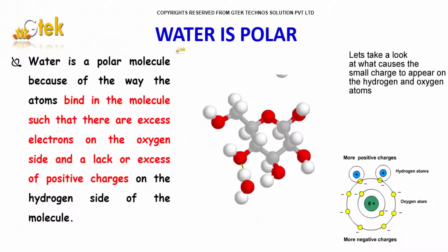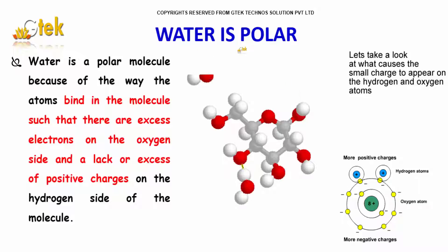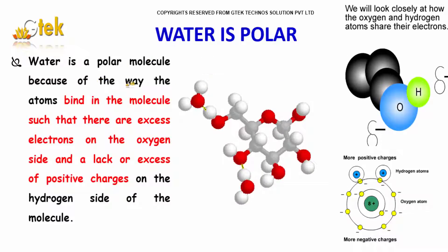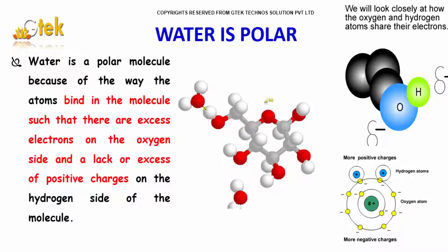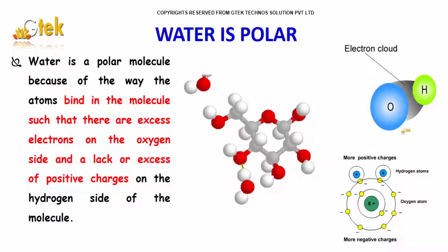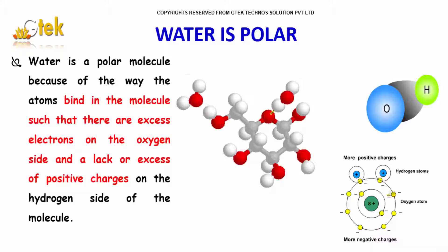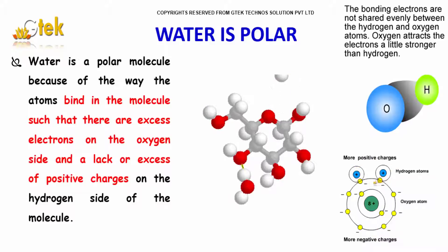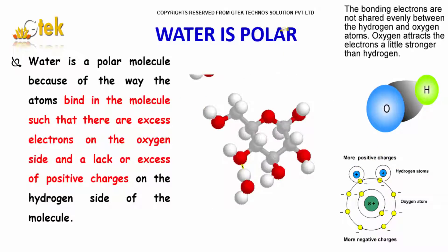Let's talk about water. Water is considered a polar molecule because of the way the atoms bind in the molecule, such that there are excess electrons on the oxygen atom. You are able to see the excess electrons, and a lack of excess positive charge on the hydrogen side of the molecule, so it is considered polar.